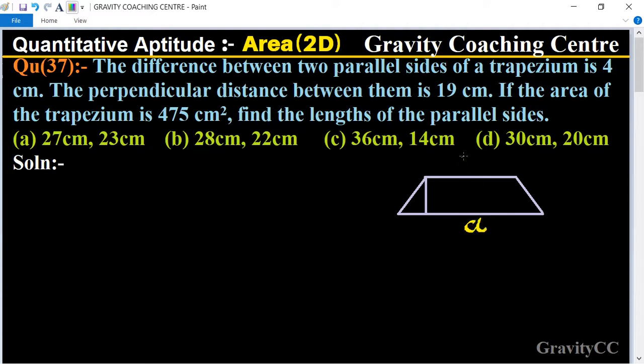Here is a trapezium and let the parallel sides be a and b, and height is given 19 centimeter. According to the question, the difference between the two parallel sides of a trapezium is given, means a minus b equal to 4 centimeter. Suppose this is the first equation.